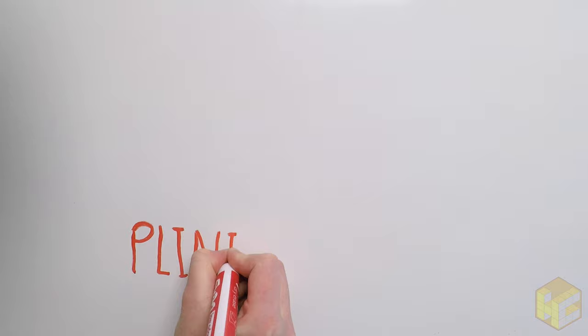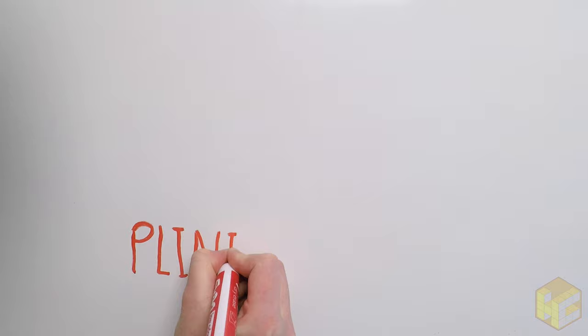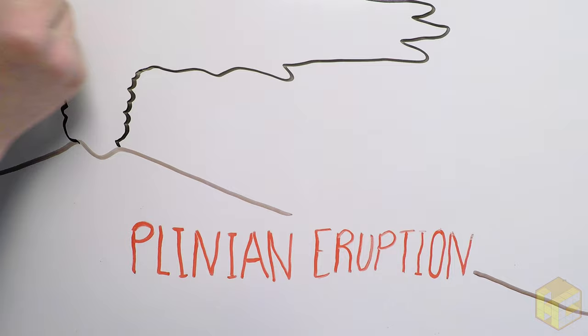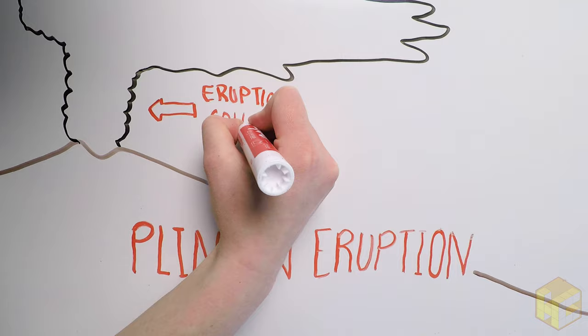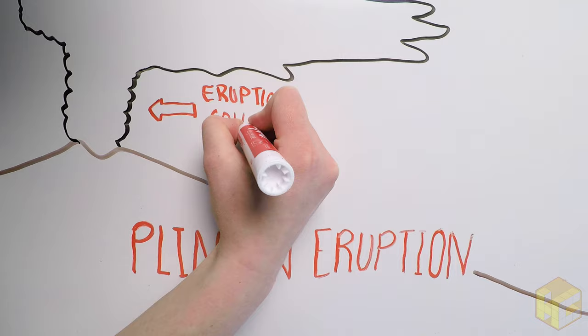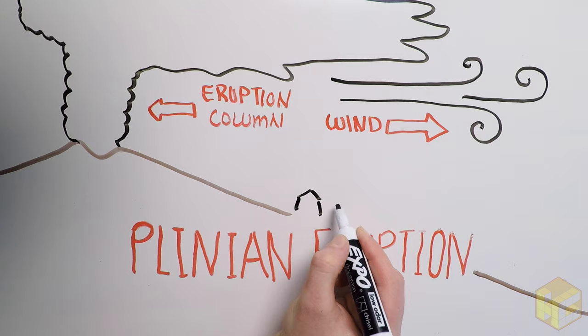This was the Plinian phase of the eruption, named after our dear friend Pliny the Younger, since he was the first to provide an eyewitness description of this type of eruption. Plinian eruptions are explosive eruptions characterized by huge eruption columns extending miles into the air. They are capable of sending stone and ash over huge areas of land and even affect global climate.